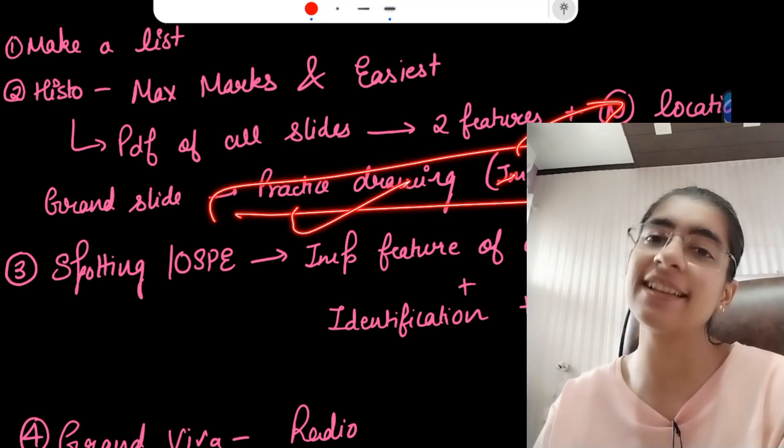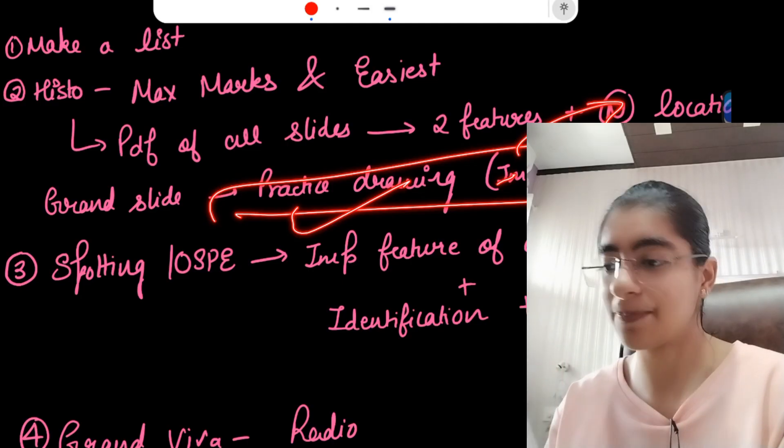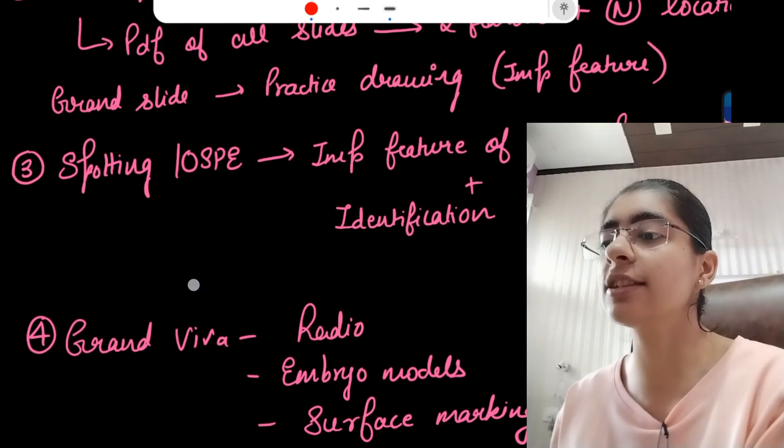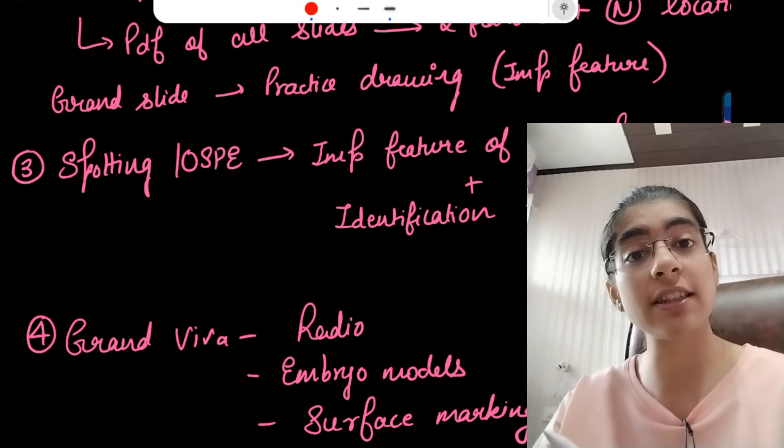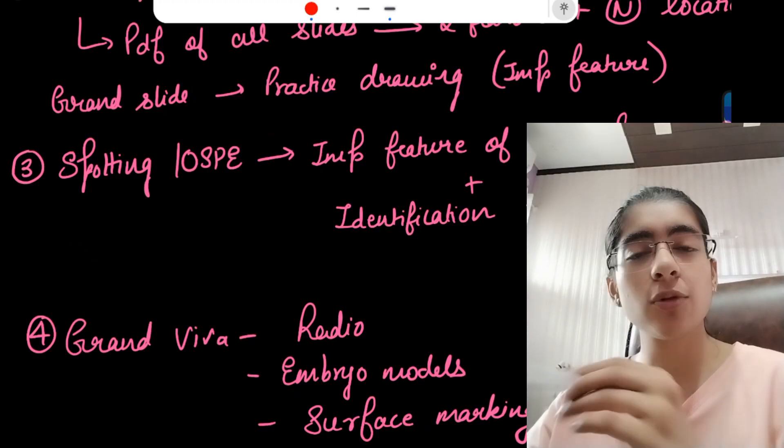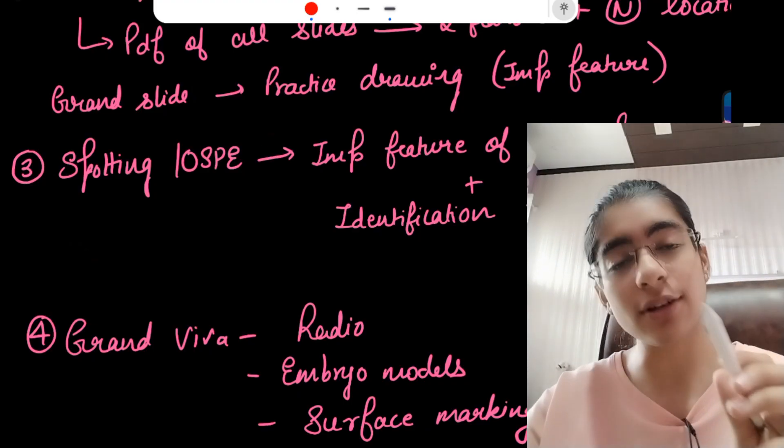You need to know what are the important features and sometimes you also need to know what are the stains which are used in histology. Next comes the spotting and OSPE of the gross anatomy in which we have all the specimens, all the bones marked, and radiology also sometimes.